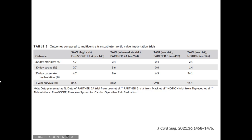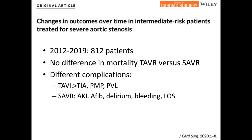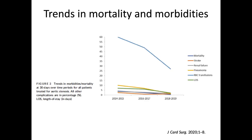A paper by Dr. Khalil from the University of Montreal examined changes in outcomes over time in intermediate-risk patients treated for severe aortic stenosis. Including 812 patients, there was no difference in mortality between TAVR and SAVR. We compared patients who presented at our institution and underwent TAVR versus SAVR. Different complications emerged: more TIA, pacemaker, and paravalvular leak in TAVR patients; and more acute kidney injury, AFib, delirium, bleeding, and longer length of stay in SAVR patients. Comparing different time periods, there's a difference in the trends of mortality and morbidity, reflecting better technique and better patient referral.